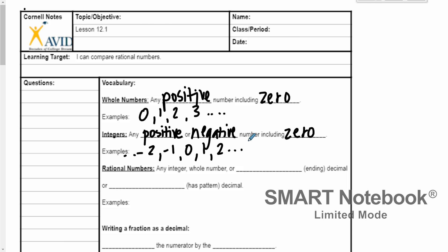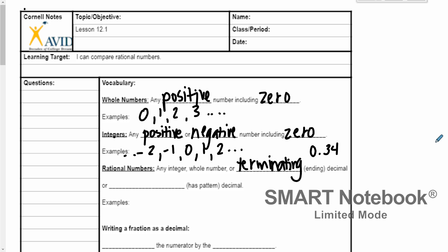Now rational numbers is what we're going to talk about today. Rational numbers are any integer or whole number — so rational numbers include whole numbers, they include integers — or they could also be a terminating decimal. Terminating just means that it ends. So that could be like 0.34 — it ends at 4, it doesn't keep going on forever. That's a terminating decimal.